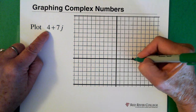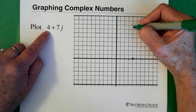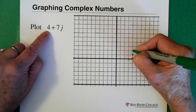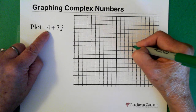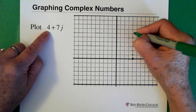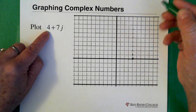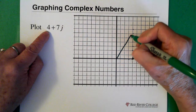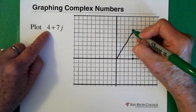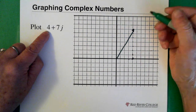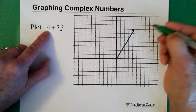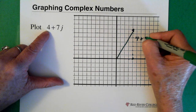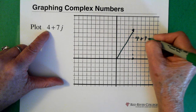There's our 4. Then we're going to add the 7j, so we're going up the j axis: 7 — 1, 2, 3, 4, 5, 6, 7. So here we are, right there more or less. And this is the 4 plus 7j.